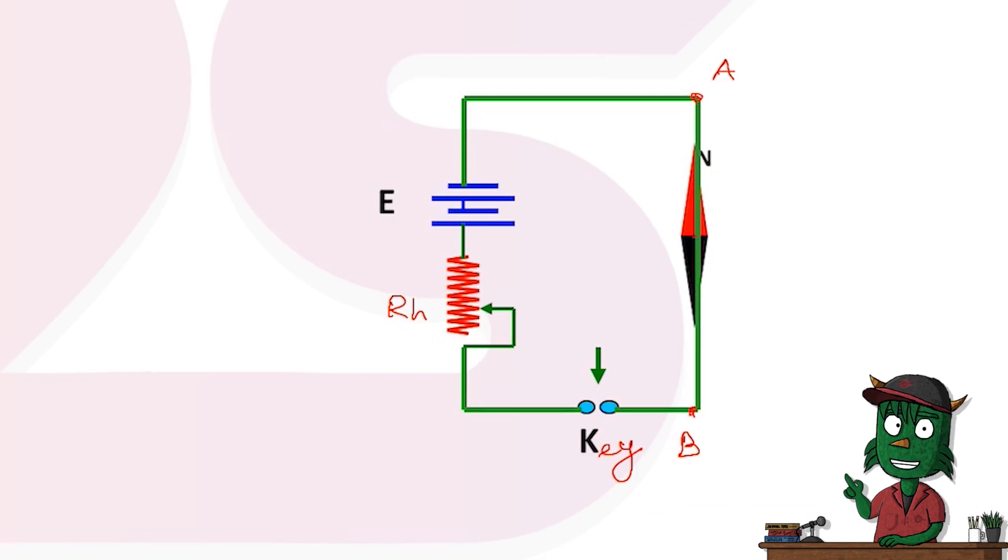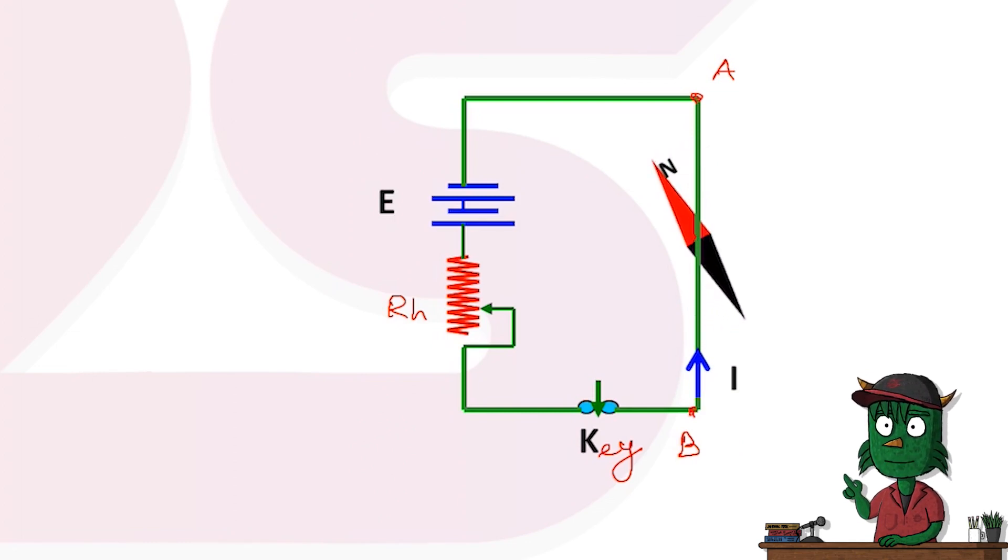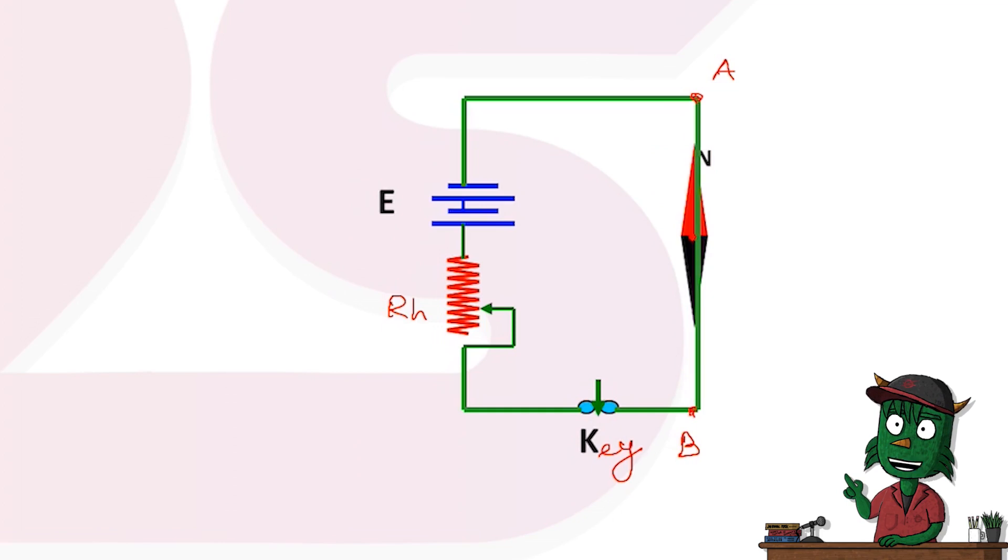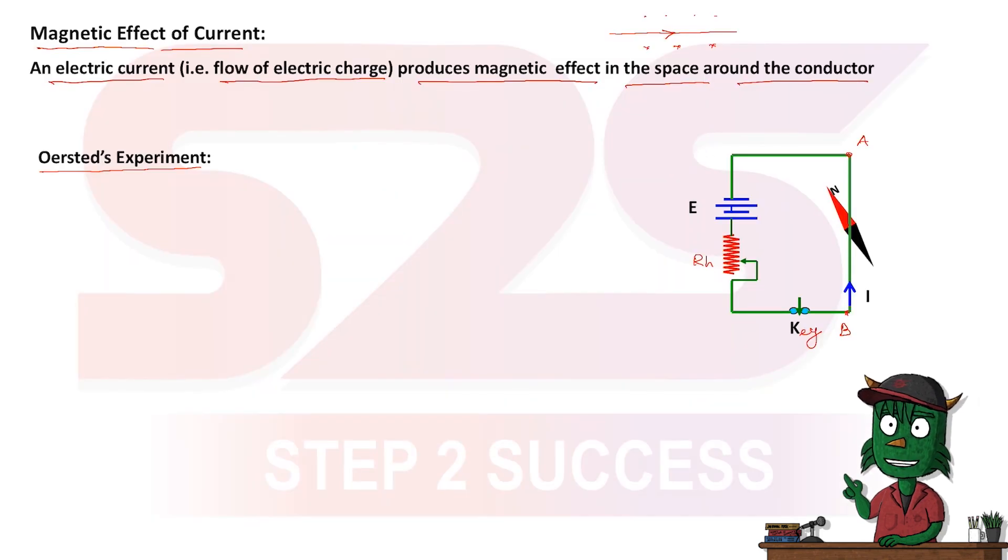As soon as he turned on the circuit, there was a flow of current. As soon as current flowed in the wire, the magnetic needle deflects. So this was Oersted's experiment.